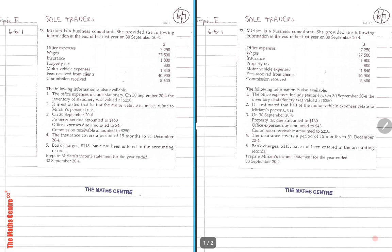Let's read the question together so that we understand what they want. Miriam is a business consultant. She provided the following information at the end of her first year on 30th September 2064. We're given numbers for office expenses, wages, insurance, property tax, motor vehicle expenses, fees received from clients, commission received. Also we're given five additional pieces of information.